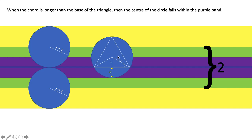But if the center of the circle is above the purple band, then the chord is shorter than the base of the triangle.